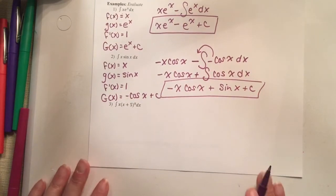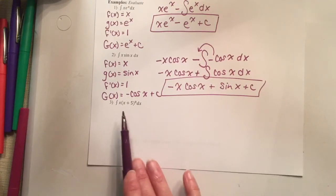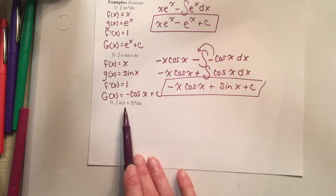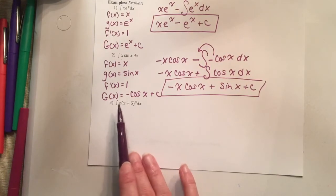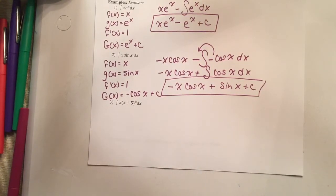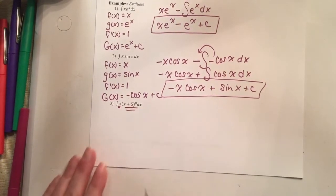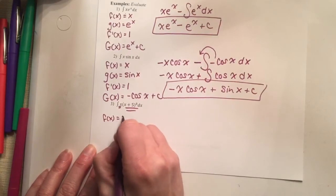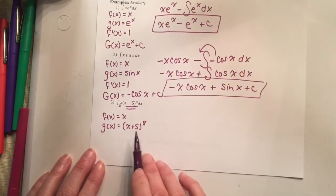This next one is a little crazy - you probably want to automatically do integration by substitution. Let me show you why it wouldn't work. If I tried substitution, f(x) would be x to the power of 8 and g(x) would be x plus 5. The derivative of x plus 5 is 1, but I can't turn a 1 into an x - so that's where you hit the wall. Instead, think of it as a product rule: f(x) is just x, and g(x) is the whole thing: (x+5) to the power of 8. That is totally fine.